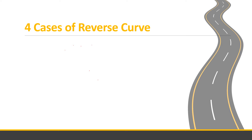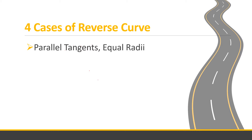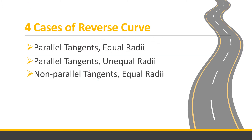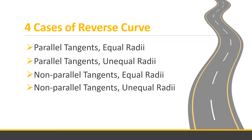There are four cases of reverse curves. First: parallel tangents with equal radii. Second: parallel tangents with unequal radii. Third: non-parallel tangents with equal radii. Fourth: non-parallel tangents with unequal radii. We will solve some examples under these cases.